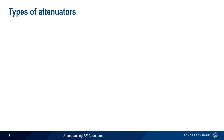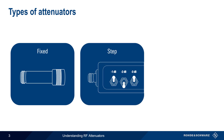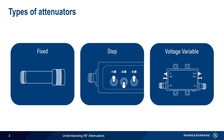The three main categories of attenuators used in test and measurement are fixed attenuators, step attenuators, and voltage variable attenuators. Over the next few minutes, we'll discuss each of these attenuator types and their most important parameters.